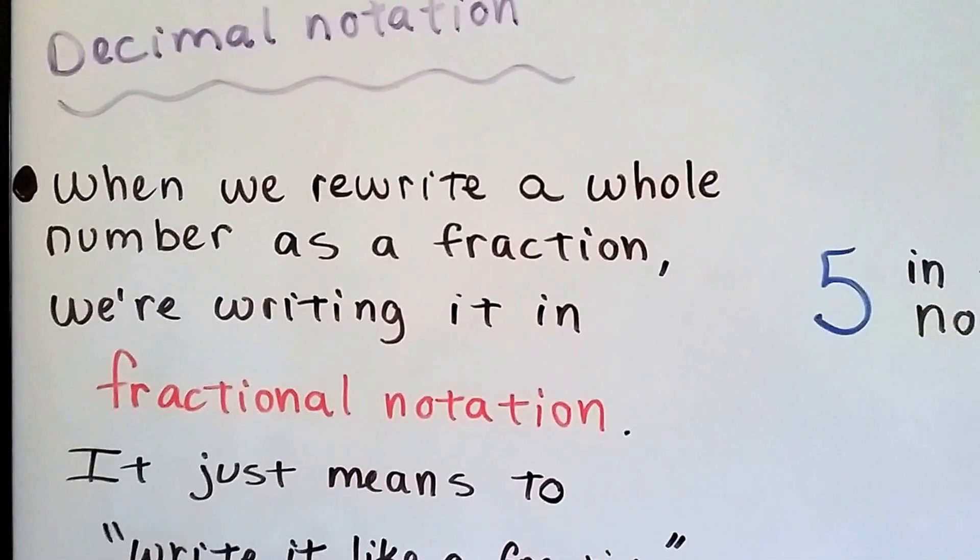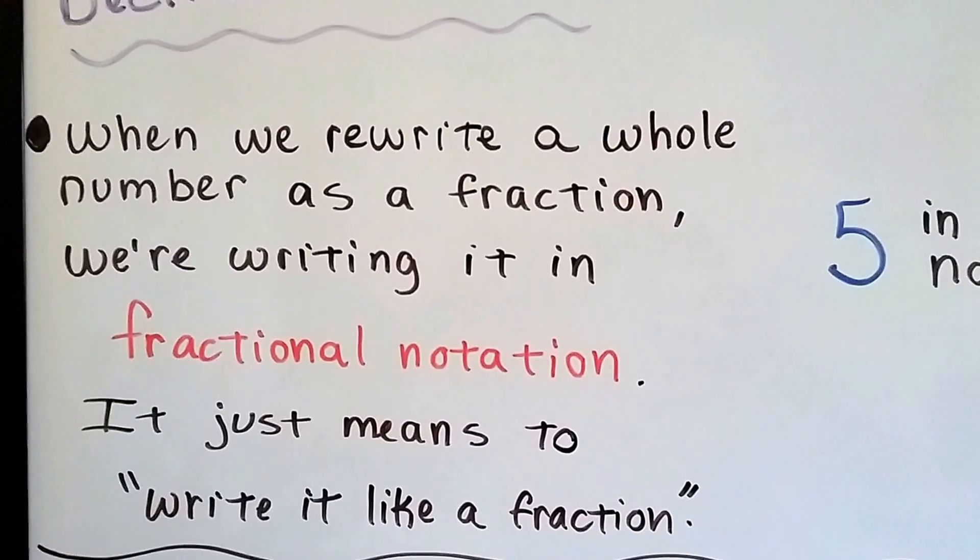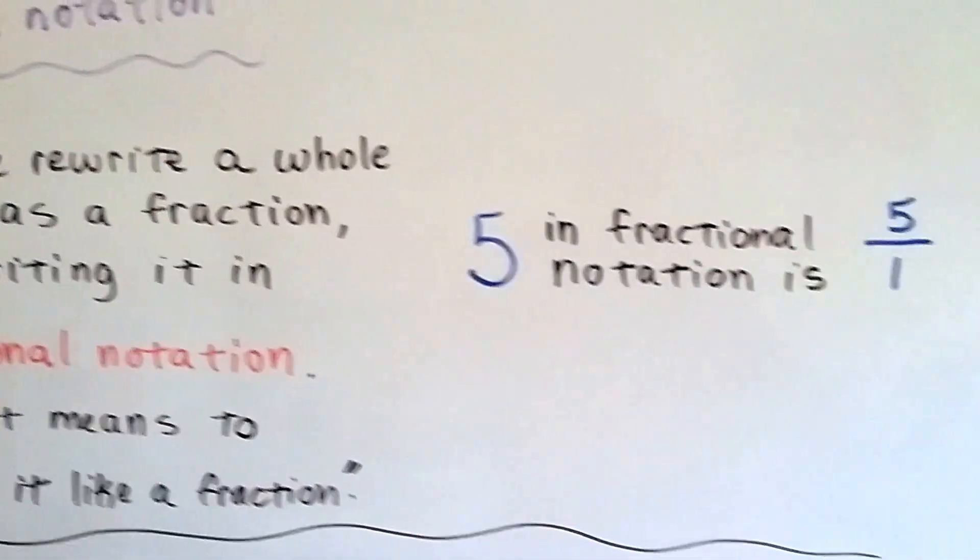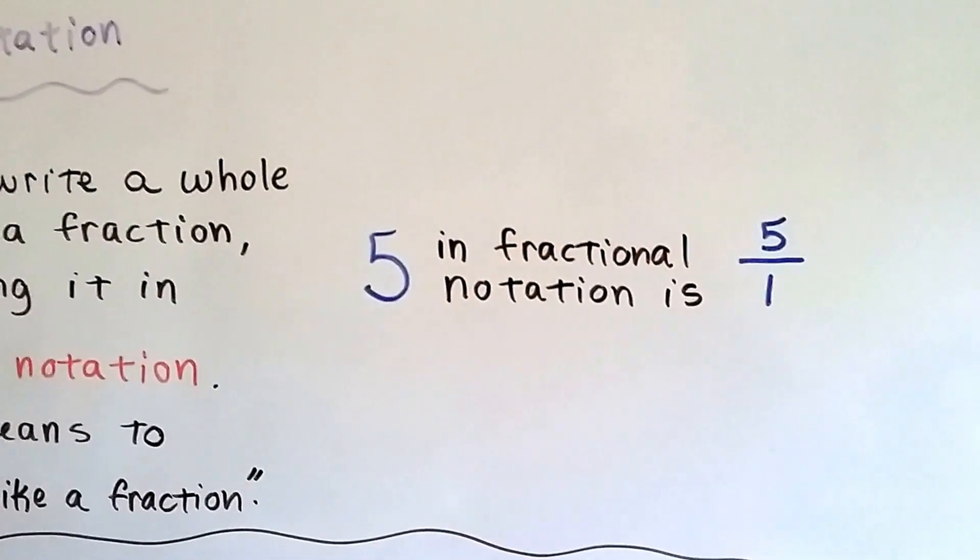When we rewrite a whole number as a fraction, we're writing it in fractional notation. It just means write it like a fraction. 5 in fractional notation is 5 over 1. See? That's all.